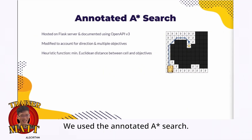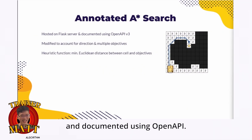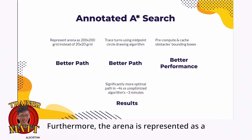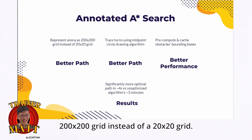For our pathfinding algorithm, we use the A* search, hosted on the class server and documented using OpenAPI. It is modified to support our comfort direction as well as multiple objectives. Furthermore, the arena is represented as a 200×200 grid instead of a 20×200 grid.